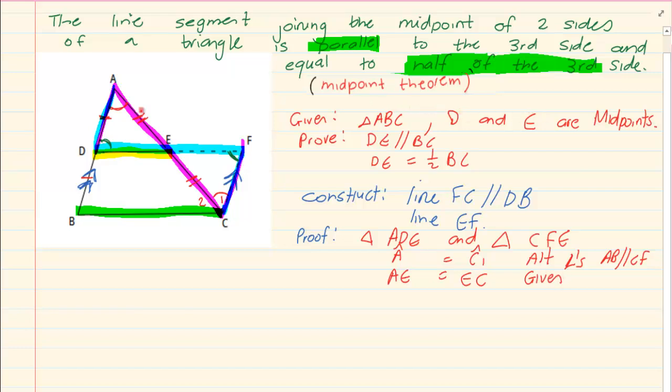That was given to us right in the beginning. Right in the beginning, they gave us that it was the midpoint and since it was the midpoint, it is equal. And we have the last angle that D, let us make it D1. D1 is equal to F. Again, alternate angles.